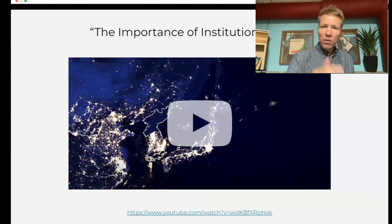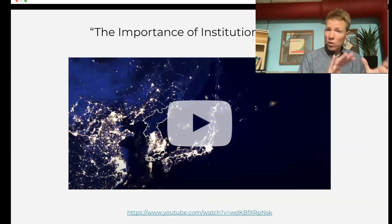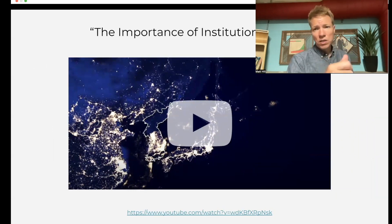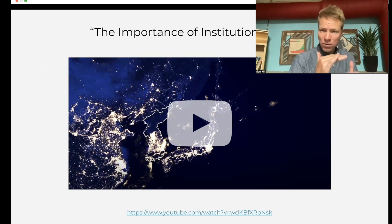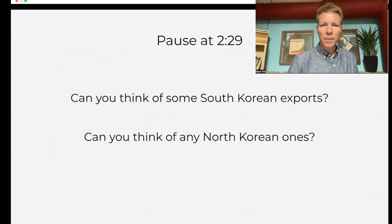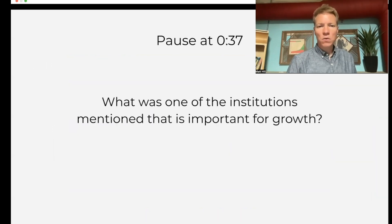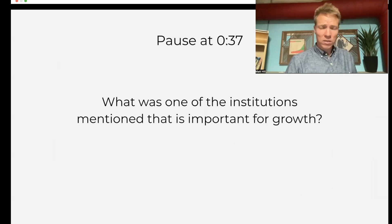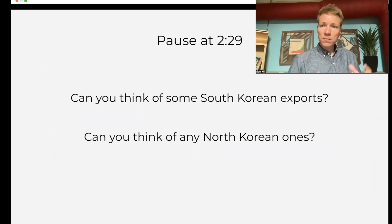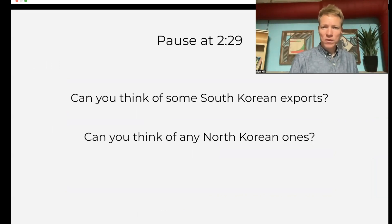Then we have one of my favorite videos going over the concept of institutions and their importance, using the example of North and South Korea, which have very different institutions and therefore very different outcomes. A couple of pre-video questions ask what was one of the important institutions mentioned in the video, getting students to think about those differences before they're presented between North and South Korea.